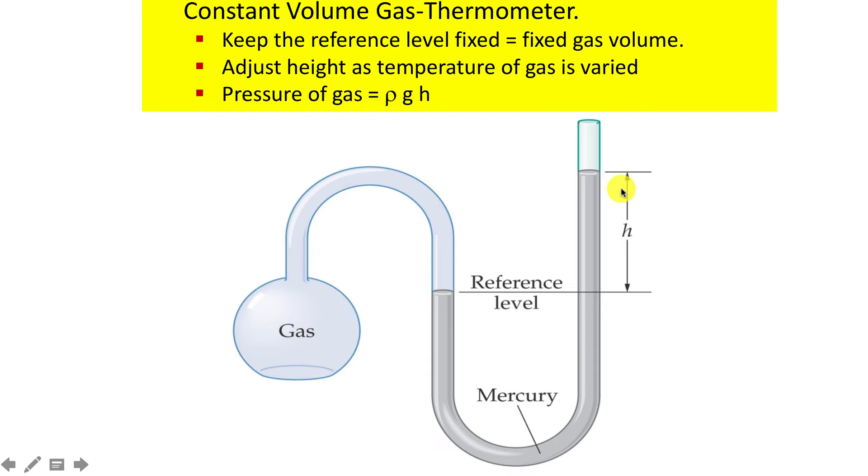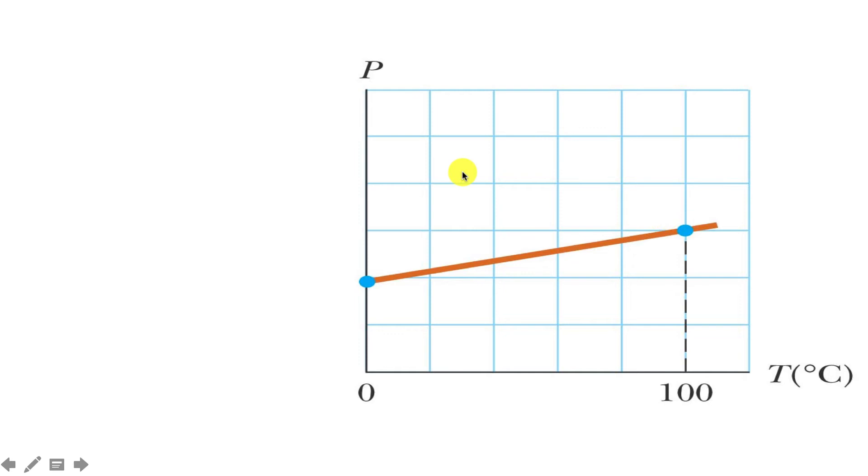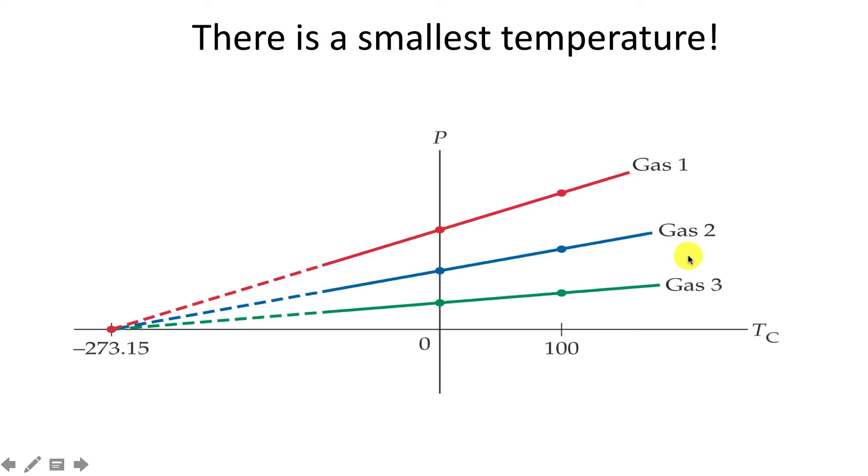What one finds is that the pressure increases linearly, or almost linearly, in the range between zero and one hundred degrees centigrade. Different gases—nitrogen, oxygen, whatever—show different increases in pressure when heated. But if you extrapolate all these lines backwards, they come and meet at one single point, known as the absolute zero of temperature. Even though this observation came from gases, it holds for every form of matter: there is a smallest temperature.